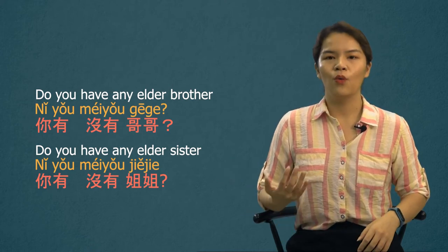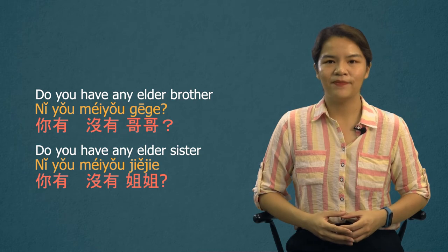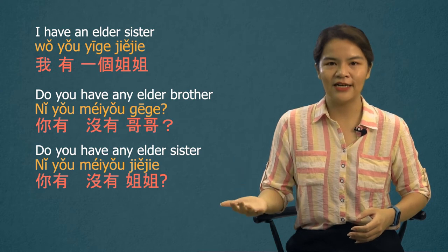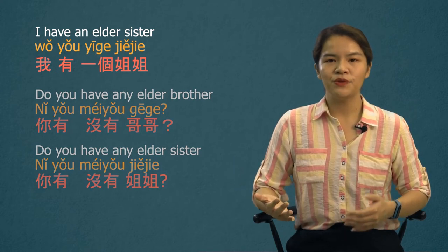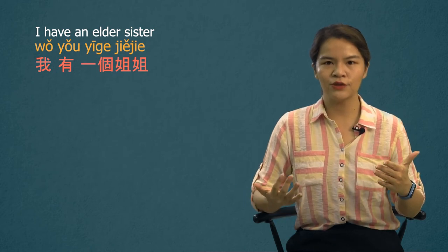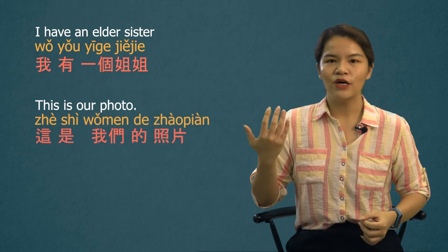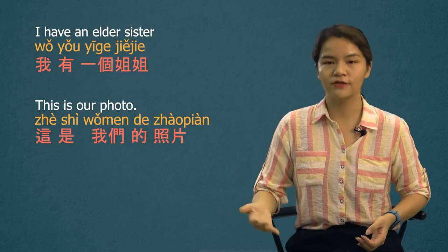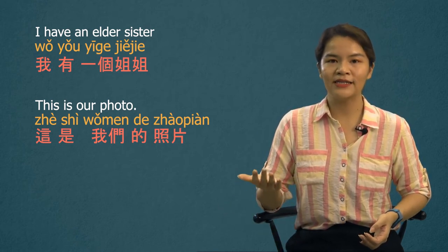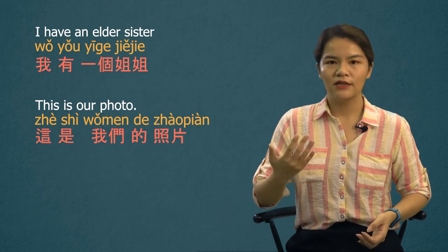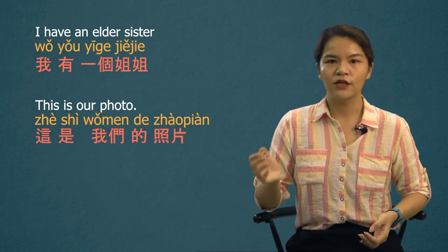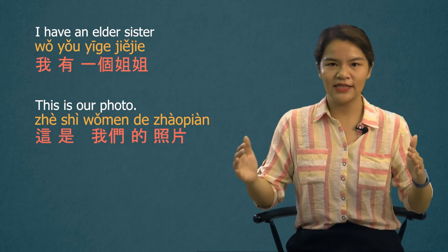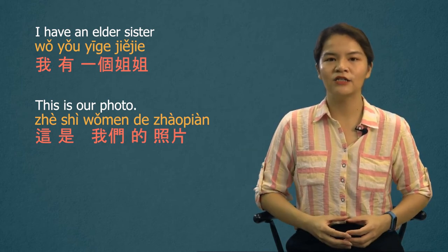If yes, I do: 我有一个姐姐 — I have an elder sister. Sometimes you may want to show photos to someone who asks that question. So: 这是我们的照片 — This is our photo. 照片 means 'photo,' with two falling tones together.